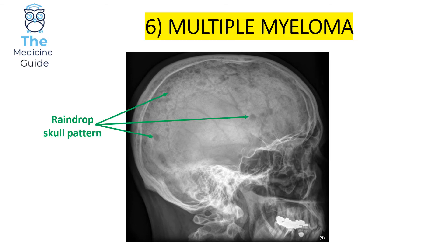This is an example of multiple myeloma, which presents on a skull x-ray with a raindrop pattern. You can see little circular blobs around the skull that look like a raindrop pattern — that should trigger you to think of multiple myeloma. This is a key classical finding.